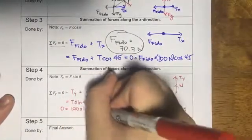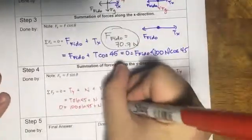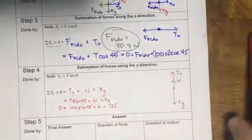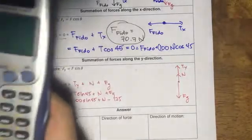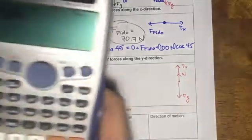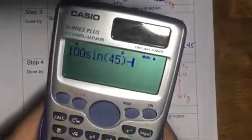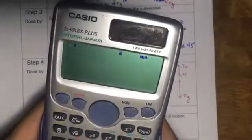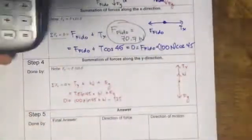Now Fg is directed downwards, so that's minus 125 newtons. Plug all of this into our calculator, so that's 100 sine of 45 minus 125, gives me negative 54.3.